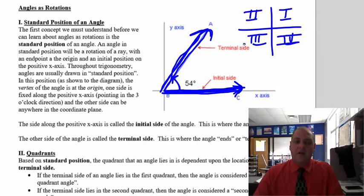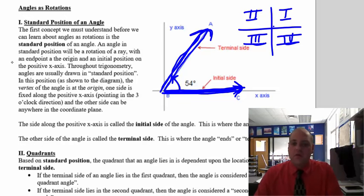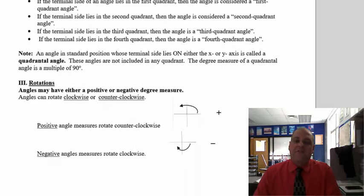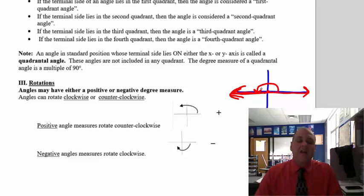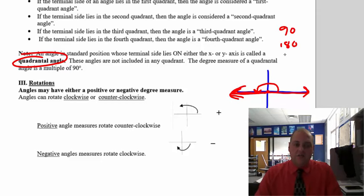This is quadrant 1, quadrant 2, quadrant 3, and quadrant 4. If an angle terminates in quadrant 1, it's a quadrant 1 angle; quadrant 2, it's a quadrant 2 angle, and so on. If the angle terminates on the axis in between quadrants — for example, 180 degrees starts here, rotates around, and stops right on the x-axis — that's called a quadrantal angle. 90, 180, 270, and 360 are all quadrantal angles.